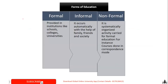Forms of education: there are three — formal, informal, and non-formal. Formal is provided with the help of schools, colleges, and universities. Informal is where the child first comes in contact with learning through family, friends, and society. Non-formal is a systematic activity carried out with the help of distance learning, that is correspondence courses done in correspondence mode.